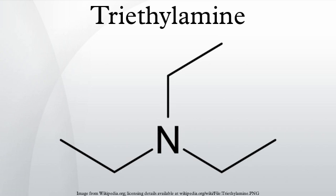Triethylamine is readily alkylated to give the corresponding quaternary ammonium salt: R-I + Et3N → Et3N⁺R I⁻. Triethylamine is mainly used in the production of quaternary ammonium compounds for textile auxiliaries and quaternary ammonium salts of dyes. It is also a catalyst and acid neutralizer for condensation reactions, and is useful as an intermediate for manufacturing medicines, pesticides, and other chemicals.